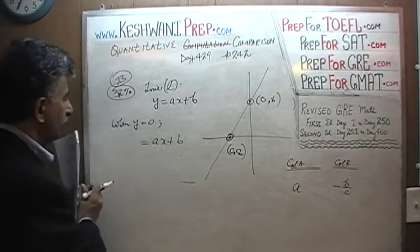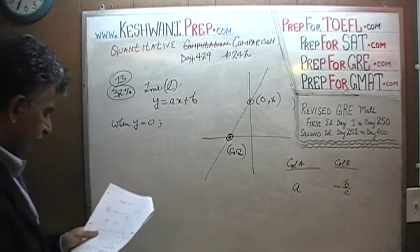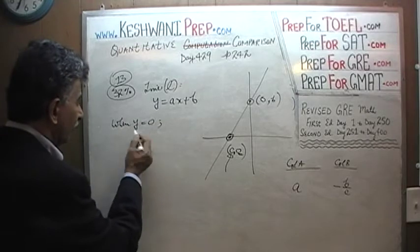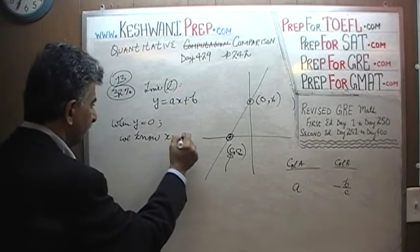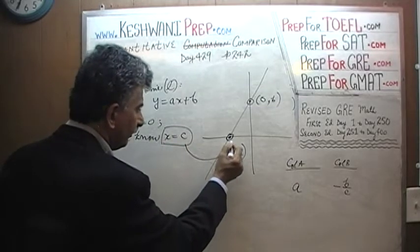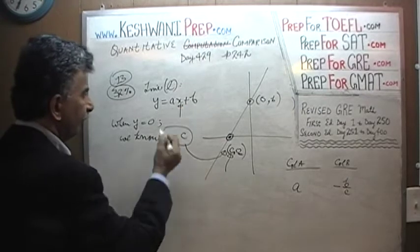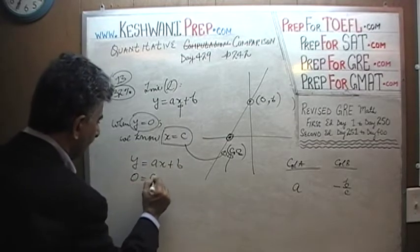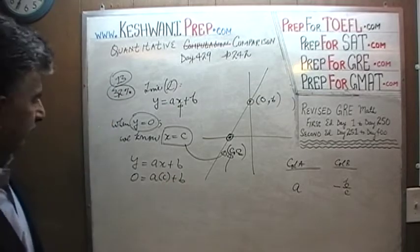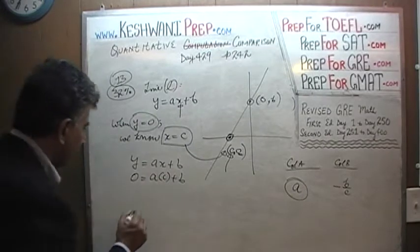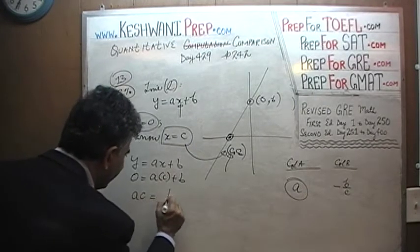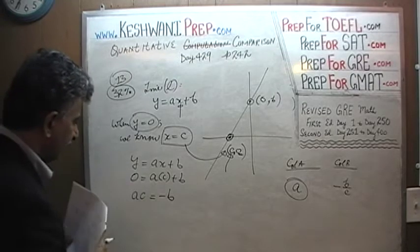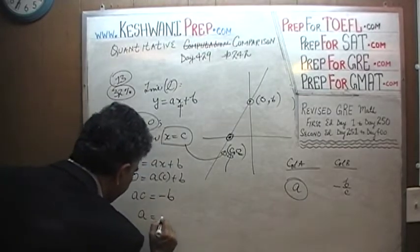When y is equal to 0, we know that x equals c — that's what the graph tells us. We put that into the equation: y equals ax plus b. When y is 0 and x is c, we get 0 equals ac plus b. We want a by itself, so we subtract b from both sides to get ac equals negative b, then divide by c to find a equals negative b over c.